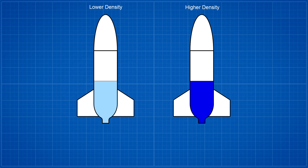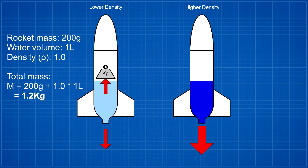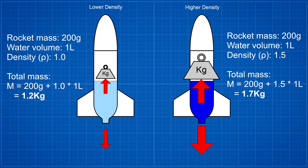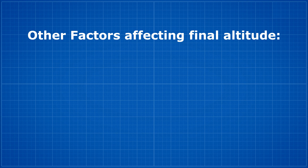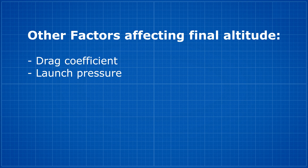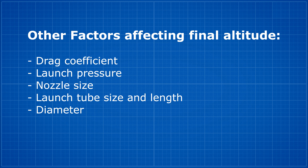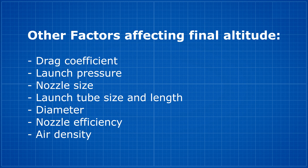However, greater thrust doesn't necessarily represent the whole picture. If you increase the density of the liquid you may produce greater thrust, but you're also making the liquid that's still inside the rocket heavier, and so you have to lift more weight which works against the greater thrust. Other than weight, there are a number of other factors that affect a water rocket's final altitude such as drag, launch pressure, nozzle size, etc.